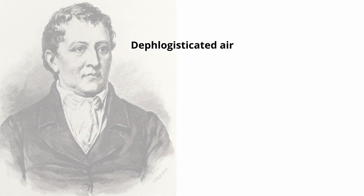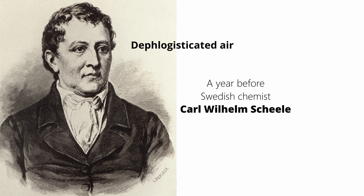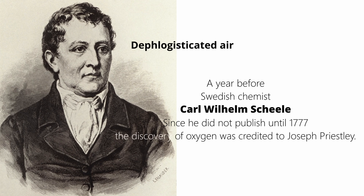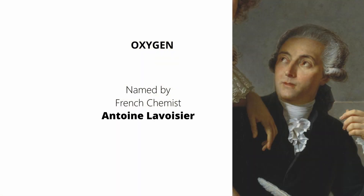But this gas was actually isolated a year before by a Swedish chemist by the name Carl Wilhelm Scheele. Since he did not publish until 1777, the discovery of oxygen was credited to Joseph Priestley. The term oxygen was named by French chemist Antoine Lavoisier, meaning acid maker.